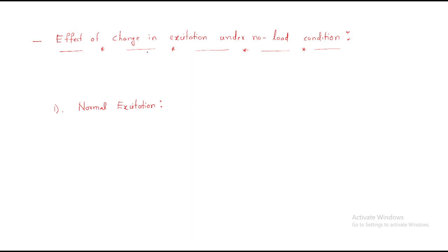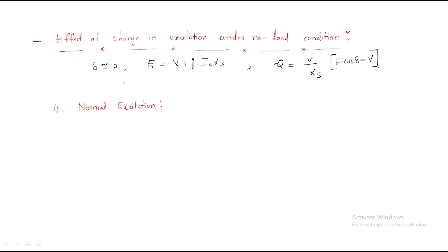Next we will discuss the effect of change in excitation under no-load condition. Under no-load condition, the load angle is approximately zero. The relation between the no-load EMF and terminal voltage is: V = E + j·Ia·Xs. The reactive power formula is: Q = (V / Xs) × (E·cos(δ) − V). Using the load angle, excitation EMF, terminal voltage, and reactive power, we can understand how the machine works.